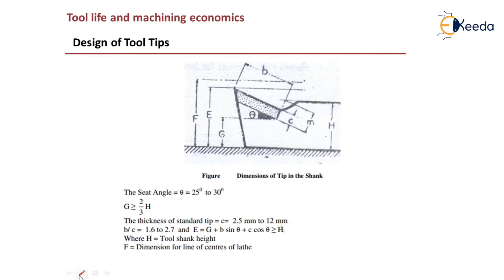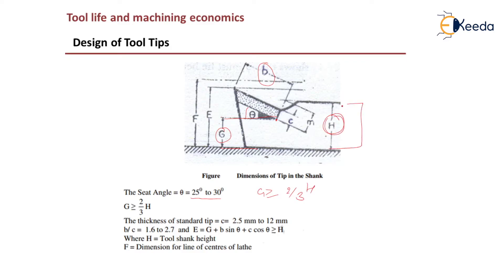With respect to dimensions of the tool tip: this is the insert portion and this is the base solid tool. The insert has a width b. The angle theta is 25 to 30 degrees, which we have already discussed. The dimension g — the distance from the bottom push position up to the tool insert position — should be greater than or equal to two-thirds of h, the entire tool shank height. The thickness of the tool tip, c, is equal to 2.5 mm to 12 mm.